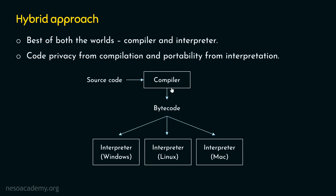This means we are getting the best of both worlds. We get code privacy from compilation because we generate bytecode, which we can provide to any machine without sharing the source code, so our code is private. We also get portability from interpretation because interpreters are installed on each machine. There is no worry that bytecode is only capable of running on a specific machine — we can run this bytecode on any machine that has an interpreter installed.